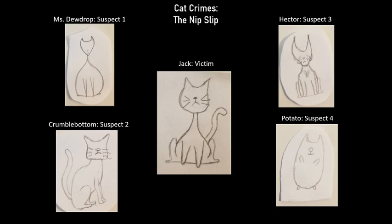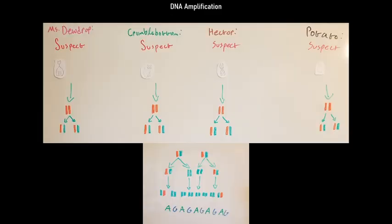A more reliable method used for determining the perpetrator of a crime is DNA fingerprinting, which involves the gathering of crime scene DNA evidence, such as saliva or blood, analyzing it and comparing it against the DNA of suspects. Salivary DNA was taken from the crime scene, along with cheek swabs from each of the kitty suspects.